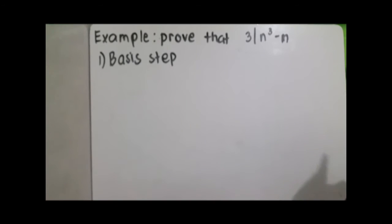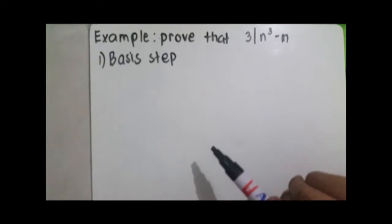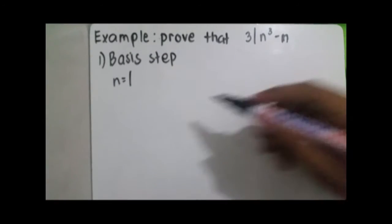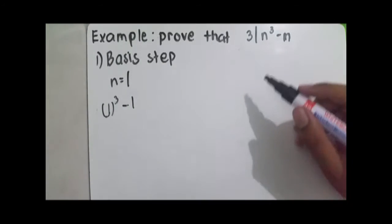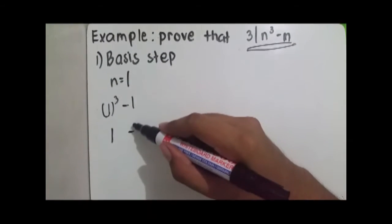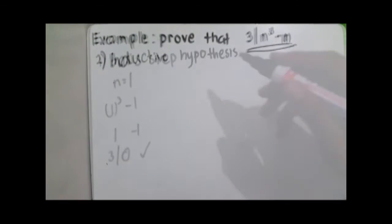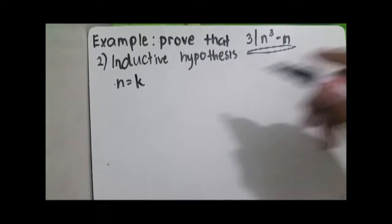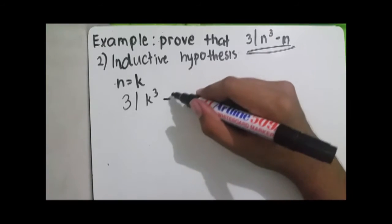For our second example, we prove that 3 divides n cubed minus n. For the basis step, we let n be equal to 1. We have 1 cubed minus 1, which equals 0, and 3 divides 0, so the basis step holds. For the inductive step, we let n be equal to any number k, and make the assumption that 3 divides k cubed minus k.